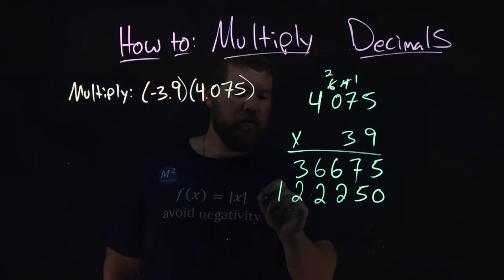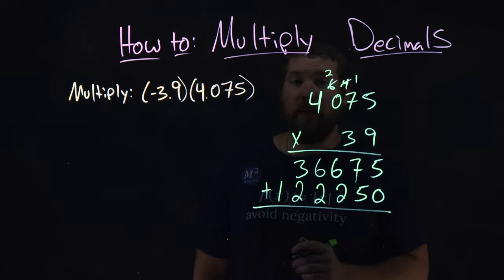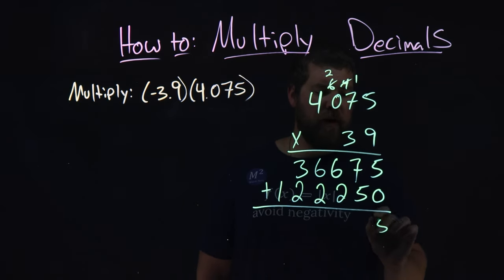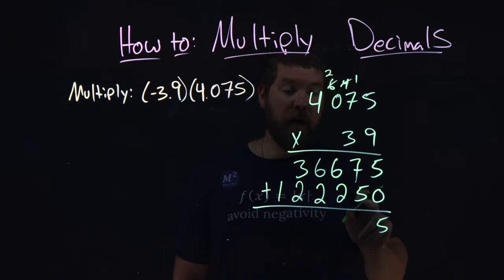Right there. So, now what we're going to do is add these two numbers together. 5 and 0 is 5. 7 plus 5 is 12. 2 carry the 1.